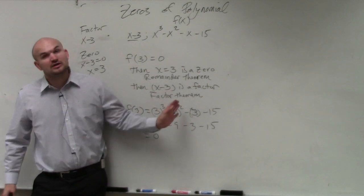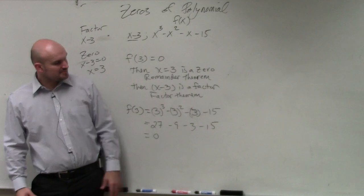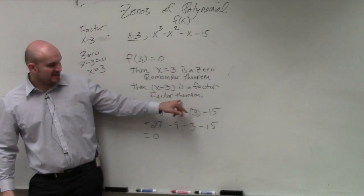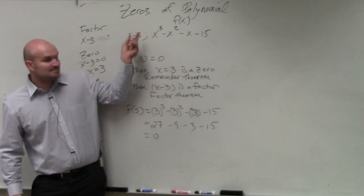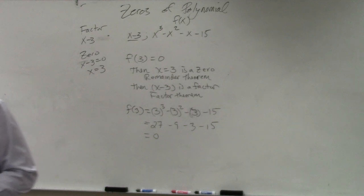So therefore, you don't need to do long division. You could. Or you don't need to do synthetic division. You could. But we can just prove here now that, via the factor theorem, that x minus 3 is a factor. Questions on that, or does that make sense?